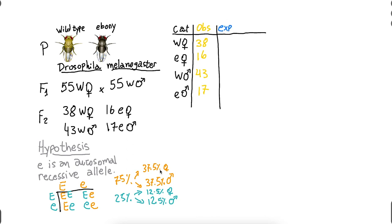So how do I calculate here my expected values? Well, I expect 37.5% of the total to be wild type female. How many flies do I have in total? I have 38 plus 16 plus 47 plus 17. That is 114 flies total. So 37.5% of 114, that is 42.75.